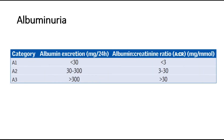The second way of classification of CKD is by albuminuria — the amount of albumin in the urine. There are three categories: A1, A2, and A3. It is classified by looking at the albumin excretion using the unit mg per 24 hours, and the albumin creatinine ratio using the unit of mg per mmol.